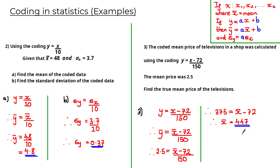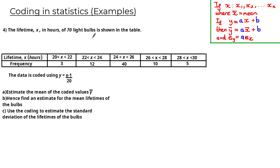Let's have a look at the next question. The lifetime x in hours of 70 light bulbs is shown in the table. The data is coded using y = (x − 1) / 20. The first part asks us to estimate the mean of the coded values ȳ. We've been given a continuous data set in a grouped frequency table, so we need to substitute the midpoints of each class interval into the coding equation. The midpoints are 21, 23, 25, 27, and 29.